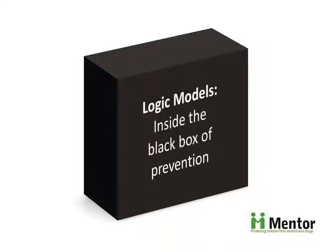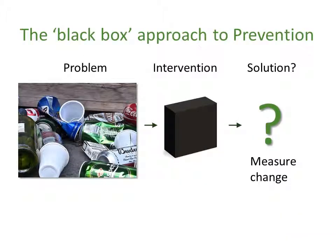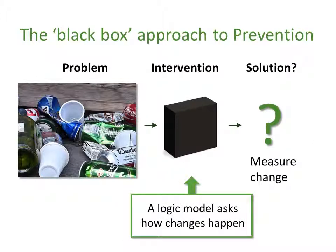Logic models look inside the black box of prevention. The black box approach to prevention sees a problem, suggests an intervention, and then hopefully measures whether it improves the situation. There are several difficulties with this approach, especially when the problem and solution are complex. Can we explain why our intervention works in one situation but not another? Which parts are essential and which are not? A logic model looks inside the black box to ask how changes happen.